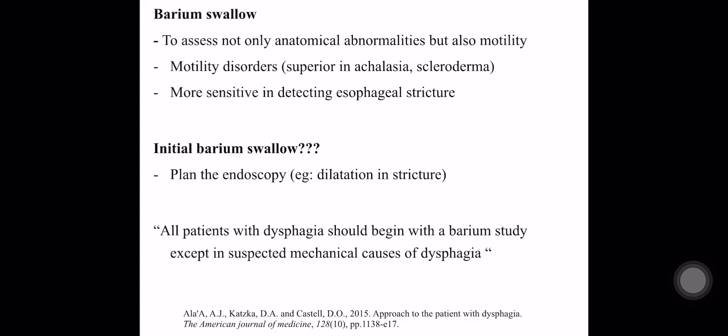Barium swallow can assess not only intraluminal abnormalities but also motility. In motility disorders, barium swallow is superior to endoscopy. It is more sensitive in detecting esophageal strictures. According to the American Journal of Medicine, initial barium swallow is better because you can plan the endoscopy — for example, to dilate a stricture. All patients with dysphagia should begin with a barium study, except in suspected mechanical causes of dysphagia.